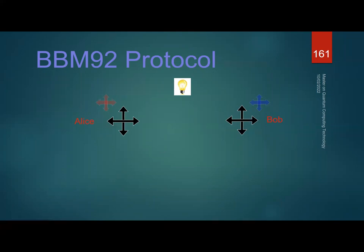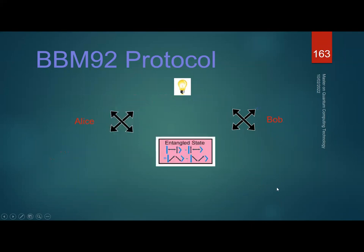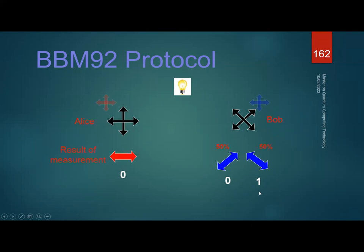In an entanglement-based protocol, Alice normally holds the photon source and sends one photon to herself and one to Bob, compensating for the optical path difference with retarders. If both measure with the rectilinear basis: if Alice measures horizontal (0), Bob always measures vertical (1) — he just needs to flip his bit. If Alice uses rectilinear and Bob uses diagonal, Bob gets 50% zeros or ones — incompatible measurement, leading to errors exactly as in BB84.